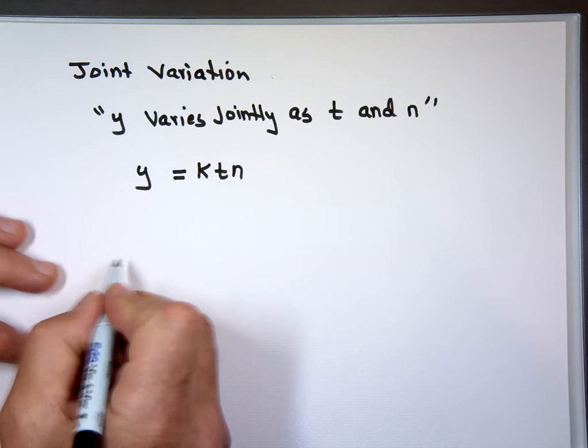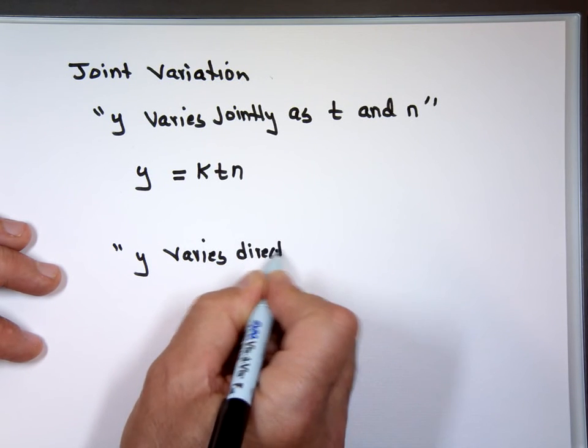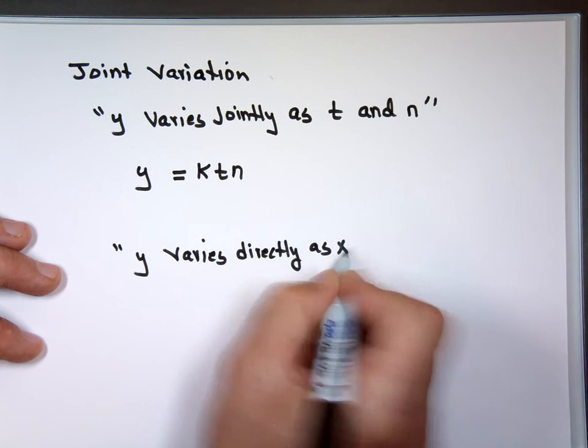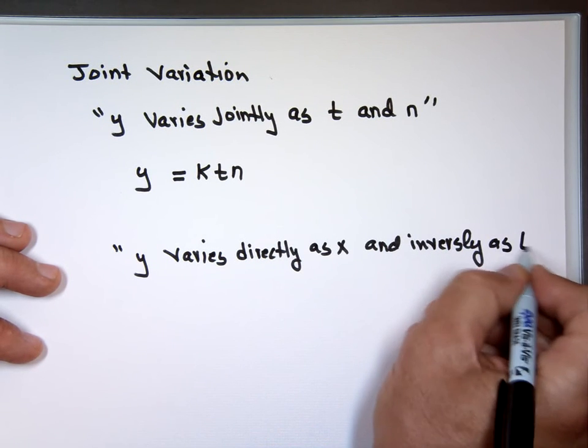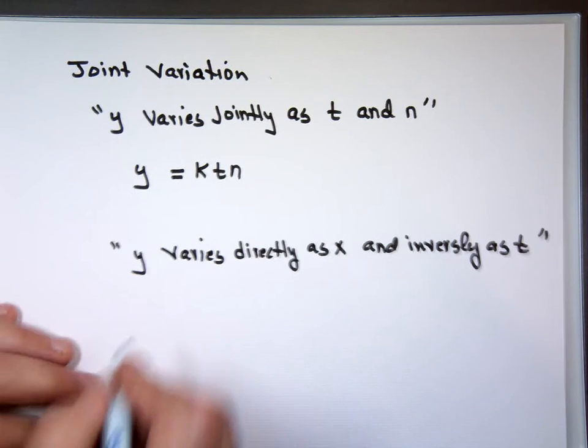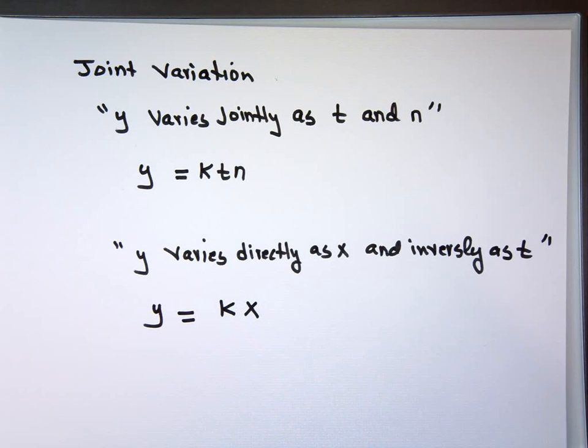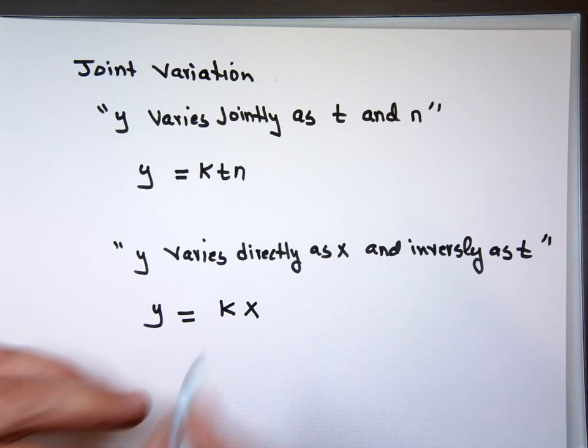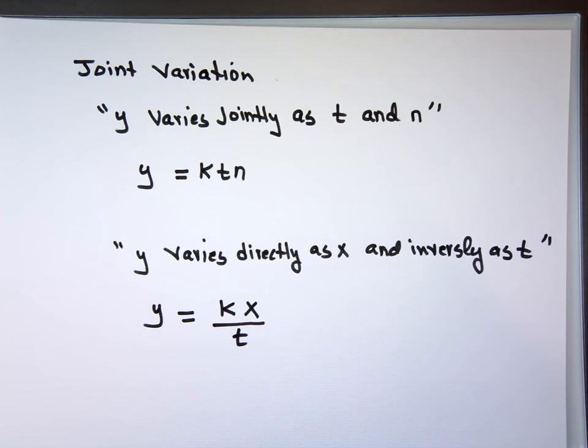Or you might see a problem like this: Y varies directly as X and inversely as T. Y varies directly as X and inversely as T. Y equals directly as X, K times X, but inversely as T. Inversely means what? K over - I already have the K on the top. That's Y equals K times X divided by T. Directly as X, inversely as T.